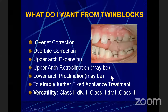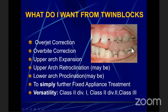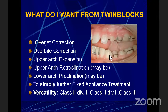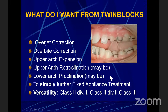What do we expect from Twin Blocks? It corrects overjet by activating the lower jaw forward with the bite plane, and overbite correction by trimming the upper bite block and allowing eruption of the posteriors. There is upper arch expansion with the help of mid-palatal screws. Upper arch incisors may retrocline due to labial bows used. There is always some proclination of lower incisors to be addressed later with fixed orthodontic treatment. The Twin Block is versatile for Class 2 Division 1, Division 2, and Class 3 cases.